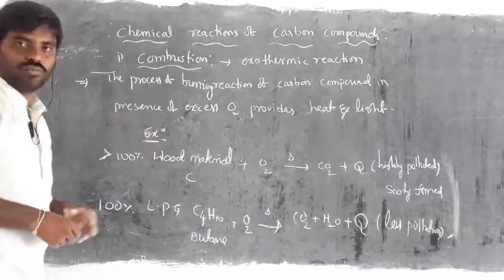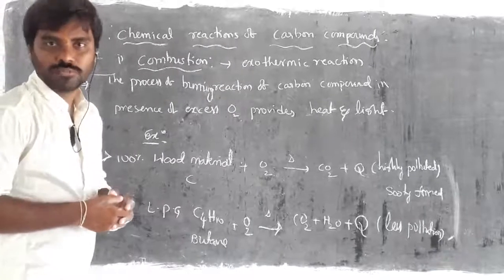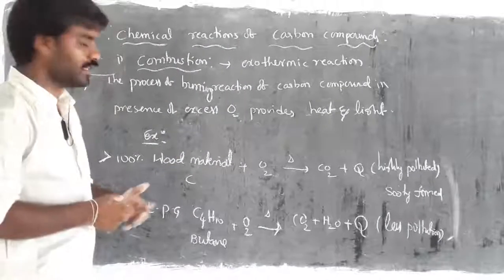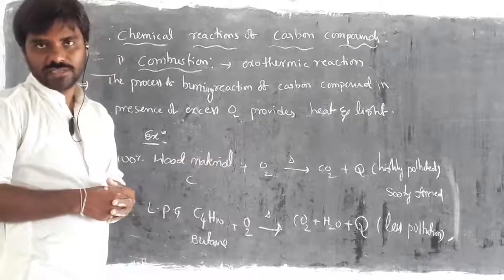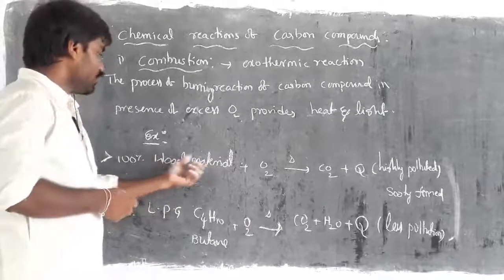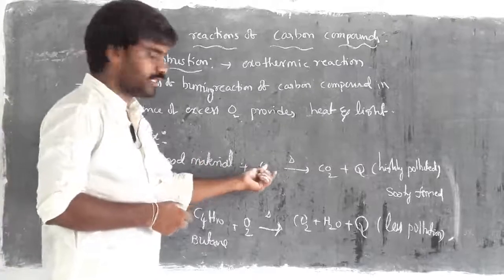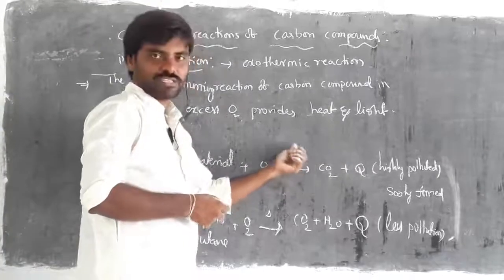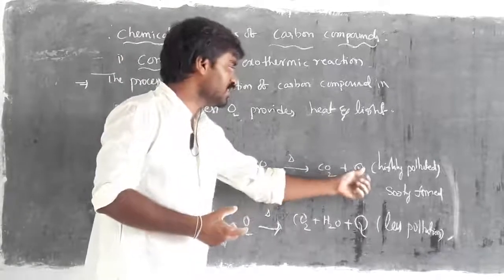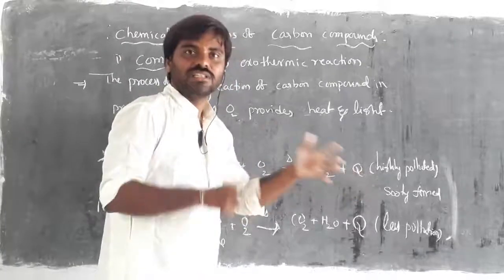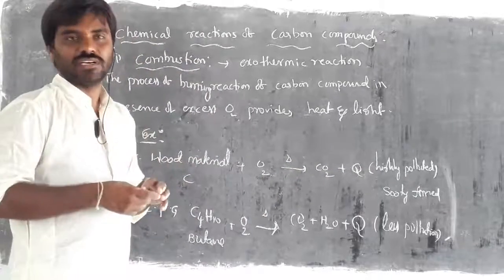If you look at the example, traditionally we have different sources as burning material or combustible material. Generally we can take wood material. The wood material consists of carbon. In presence of oxygen, the combustion reaction — that is, burning of that material — releases carbon dioxide with heat. The heat amount is a little bit less when compared with LPG gas.